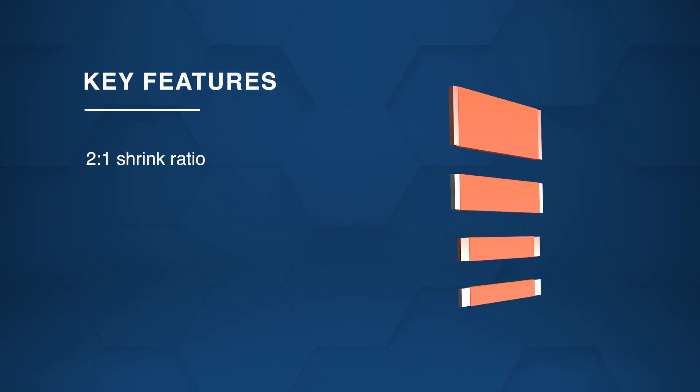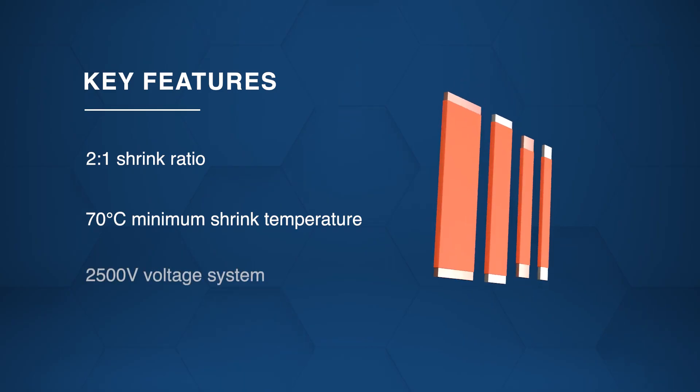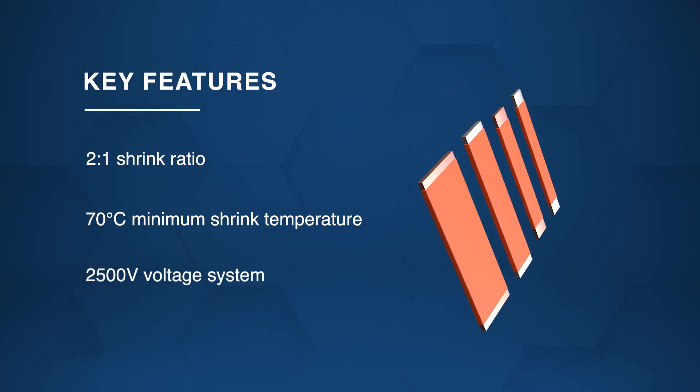With a 2 to 1 shrink ratio and a 70 degrees Celsius minimum shrink temperature, they operate in voltage systems up to 2500 volts.